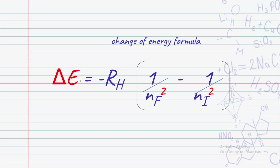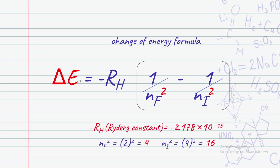Change of energy, using the formula: change of energy equals the Rydberg constant times the bracket, 1 over energy final squared minus 1 over energy initial squared.